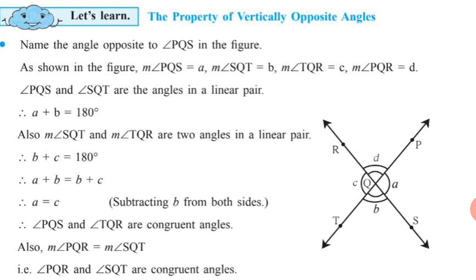Measure of angle SQT equals B, measure of angle TQR equals C, and measure of angle PQR equals D. We are just assuming the measures of these angles with alphabets. Angle PQS, denoted by A, and angle SQT, whose measure is B, are angles in a linear pair. Using the property of angles in a linear pair: A plus B equals 180 degrees.